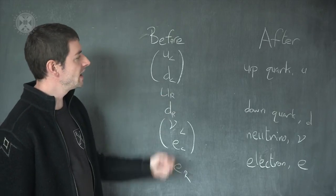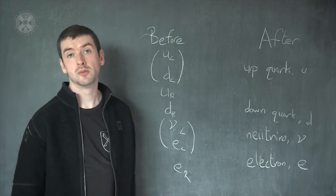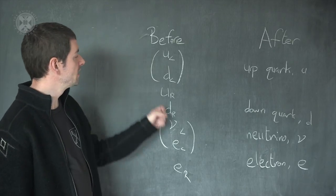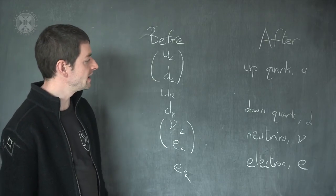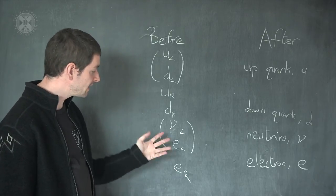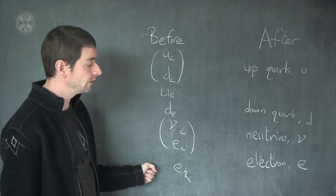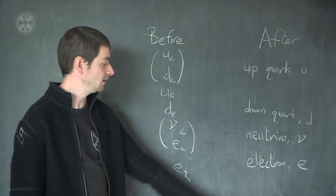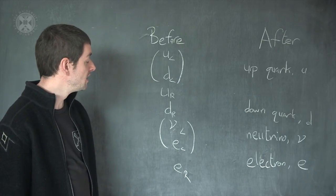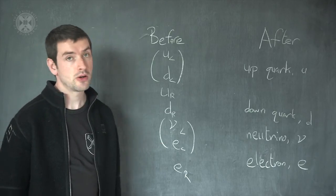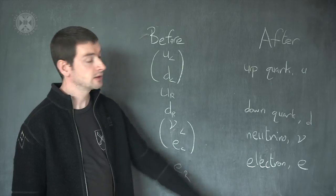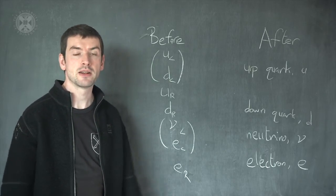After symmetry breaking, the left-handed up and the right-handed up pair up and become the up quark U. In just the same way, the left-handed down and the right-handed down pair up and form the down quark D. Again, in exactly the same way, the left-handed electron and the right-handed electron pair up and form the usual electron E. Finally, as far as we know, there are only left-handed neutrinos in nature. So after symmetry breaking, there is a neutrino, but it's just a left-handed particle.